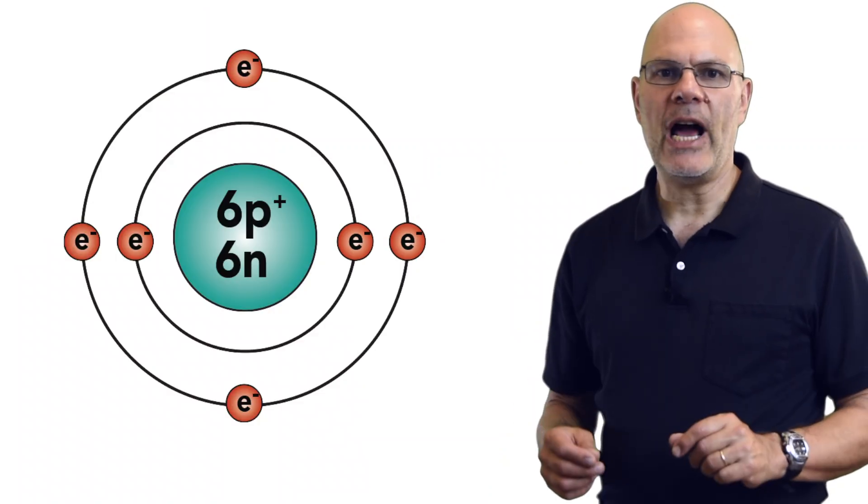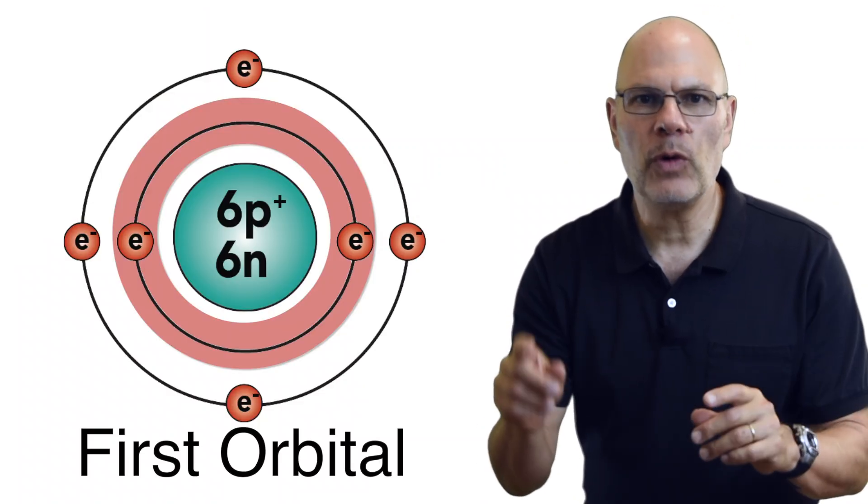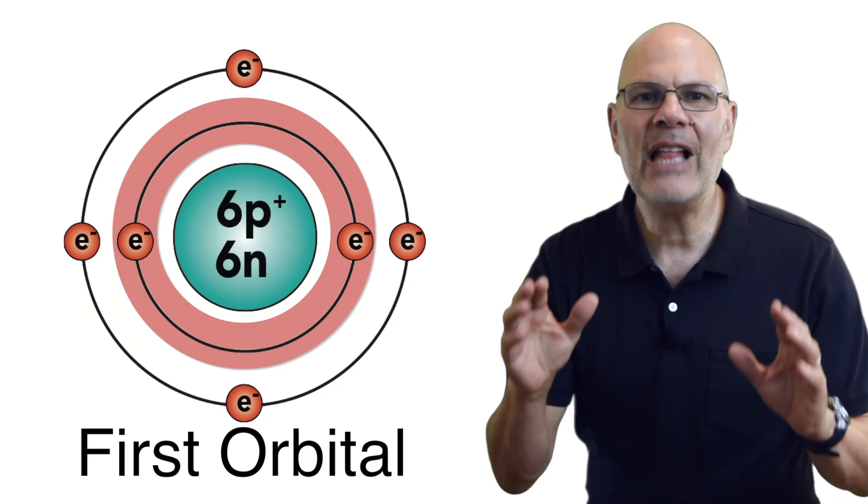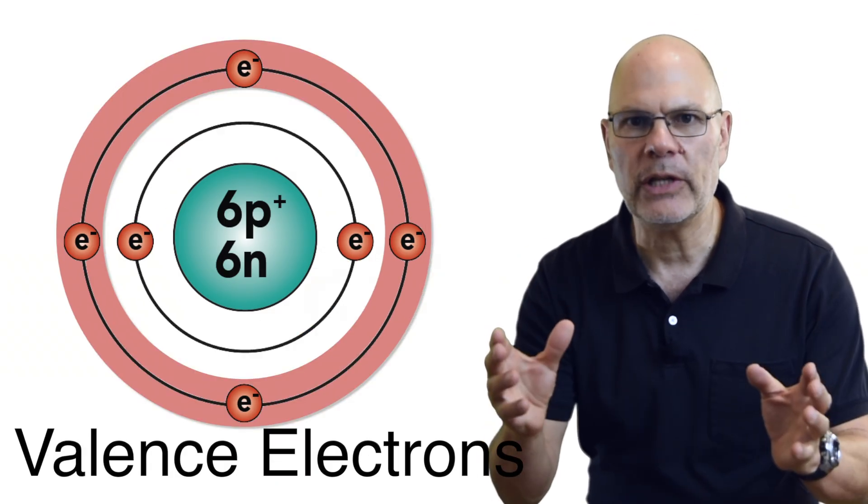Think back to the octet rule. The first two electrons go into the first orbital. That leaves four outer, or valence, electrons.